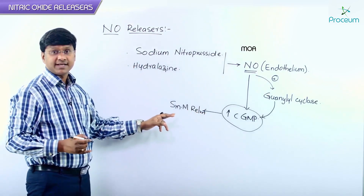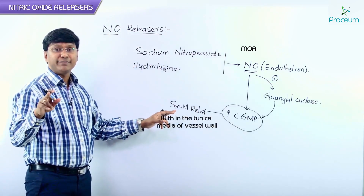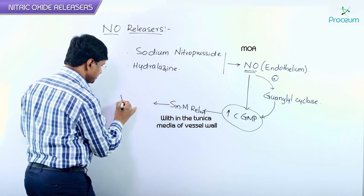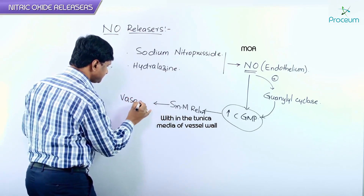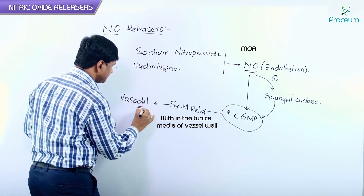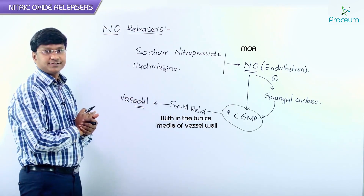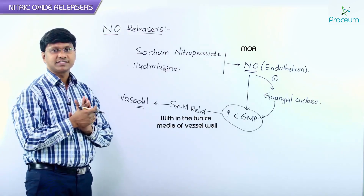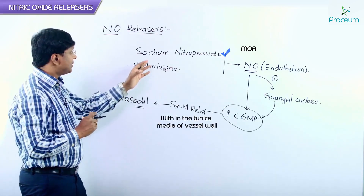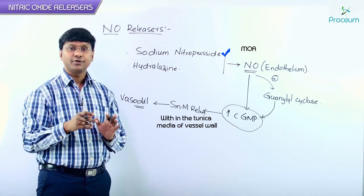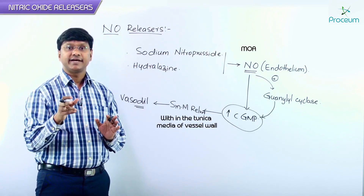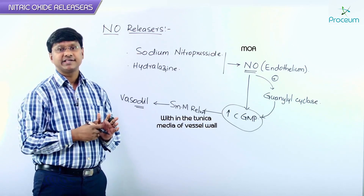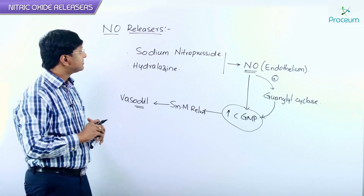This cyclic GMP will cause smooth muscle relaxation within the tunica media of the blood vessel, and that will cause vasodilatation. This is the mechanism of action of these nitric oxide releasers. Sodium nitroprusside, in addition, can directly stimulate the guanylyl cyclase to cause an increase in cyclic GMP.